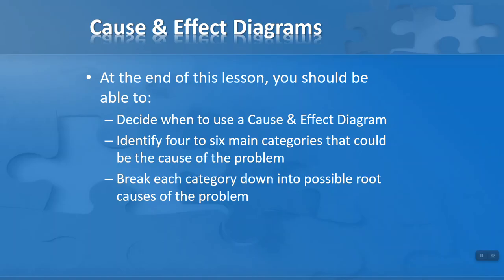So our objectives for this lesson—at the end of this lesson you should be able to decide when to use a cause and effect diagram, identify four to six main categories that could be the cause of the problem, and break each category down into possible root causes of the problem.